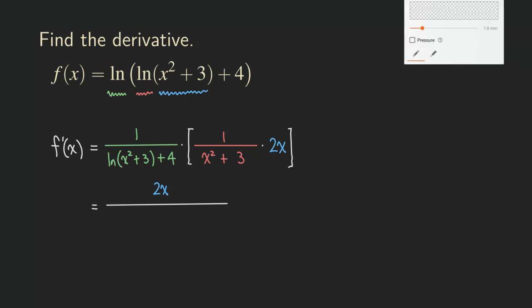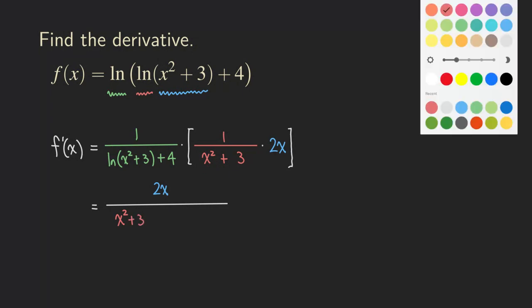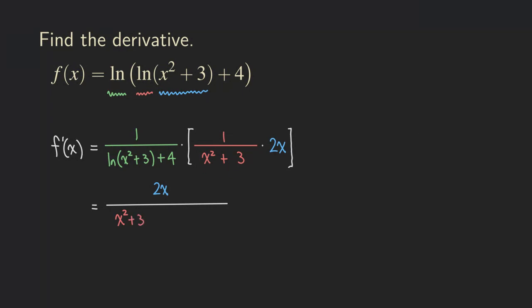We are going to be getting this x squared plus 3. So let's just put that x squared plus 3. And then we also need to put the green expression. So we are going to be putting this here, ln of x squared plus 3, and then plus 4.